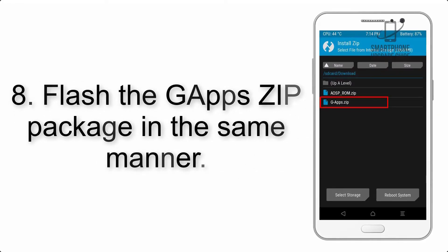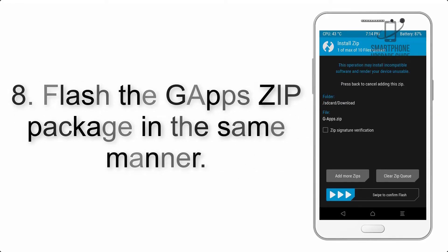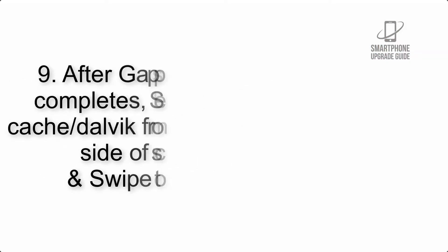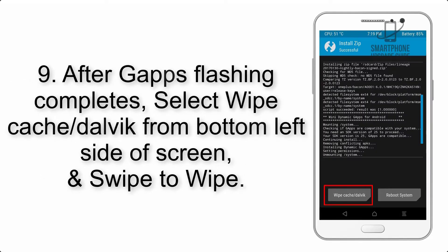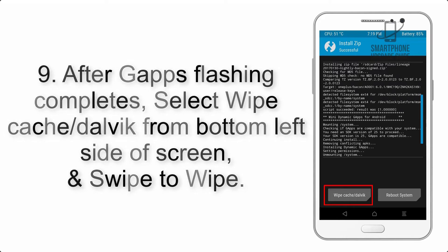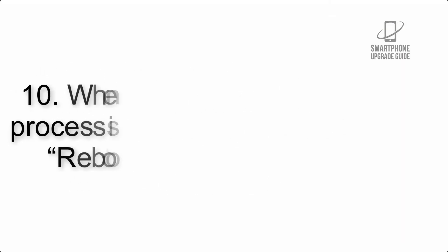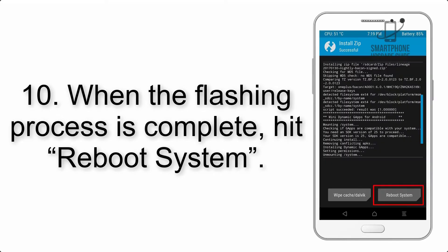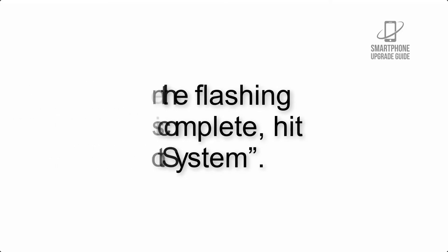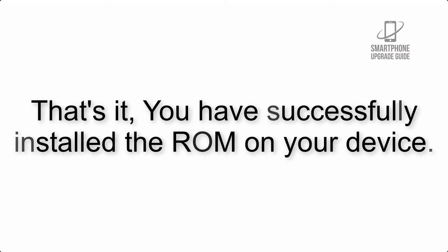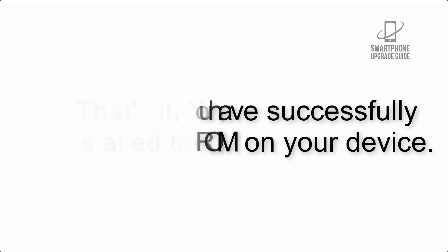Step 8: Flash the GApps zip package in the same manner. Step 9: After GApps flashing completes, select Wipe Cache and Dalvik from the bottom left side of the screen and swipe to wipe. Step 10: When the flashing process is complete, hit Reboot System. That's it — you have successfully installed the ROM on your device.